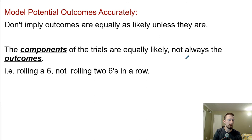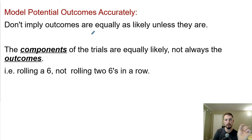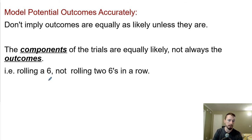Model potential outcomes accurately — don't imply outcomes are equally as likely. If it's 20% LeBron, make sure you assign two digits to LeBron. The components of the trials are equally likely, not always the outcomes. The numbers zero through nine are all equally likely to occur, but when we assign different numbers of those components to different outcomes, those outcomes are not equally likely. For example, rolling a six and rolling a five on one die are equal, but rolling two sixes in a row — that's different.